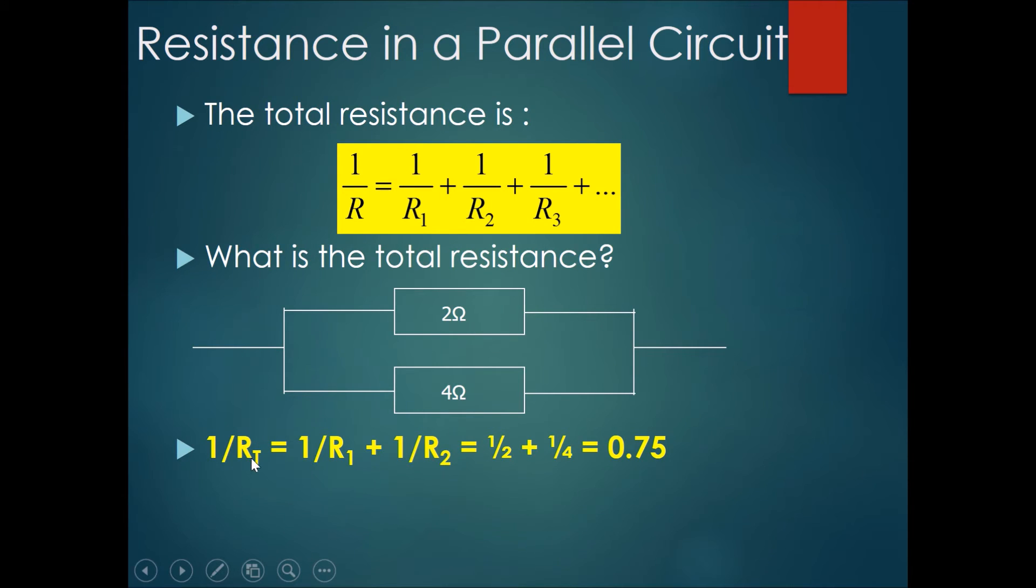1 over R total equals 1 over R1 plus 1 over R2. This would be equals to 1 over 2 plus 1 over 4, giving us 0.75.